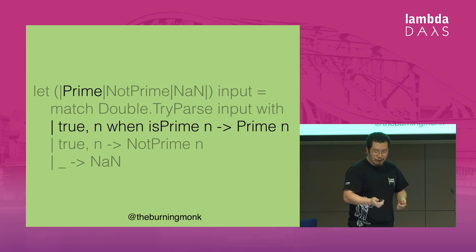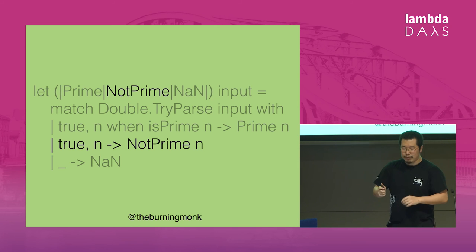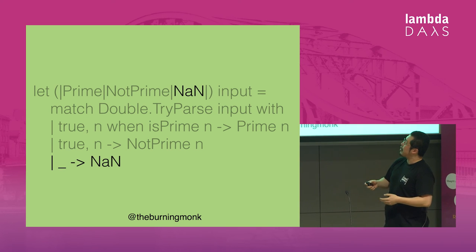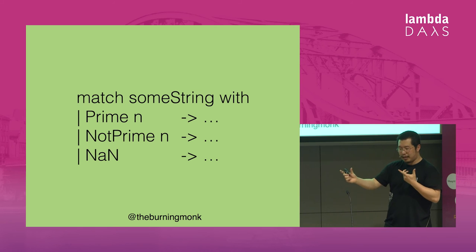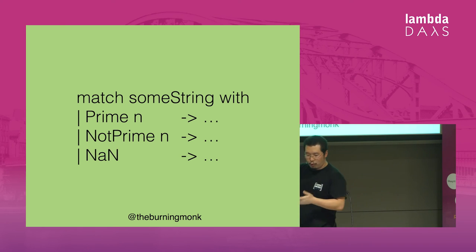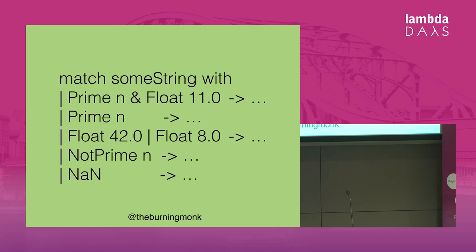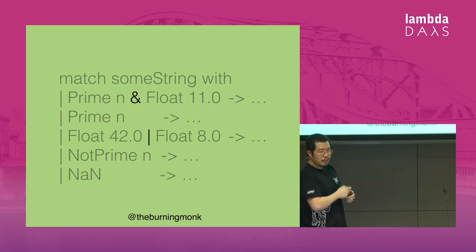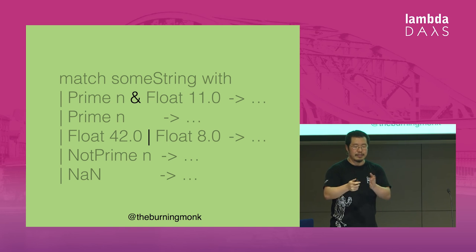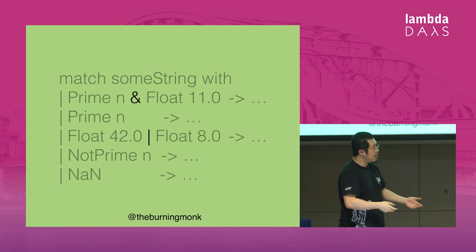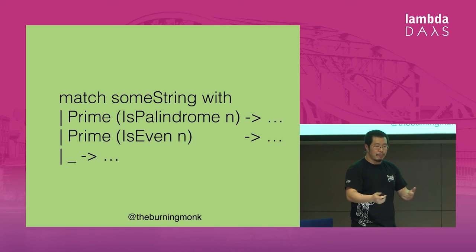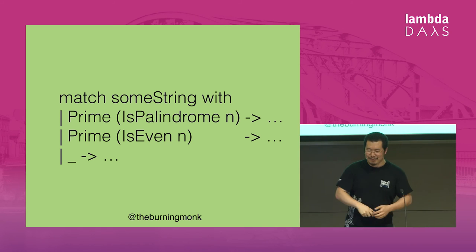The very last type of active pattern is a multi-case pattern, where given some input you implicitly declare some union type with different cases you can map that input into — so if it's prime, return the Prime case with the float; if it's not prime or not a number, and so on. When doing pattern matching with this, you can compose different patterns together in the same match case using AND or OR semantics, or even nest different patterns. For example, if the Prime pattern matches and you apply a palindrome active pattern against the float — this says if a string represents a prime number that is also a palindrome, that is a 'power prime,' which you'd know from Project Euler.